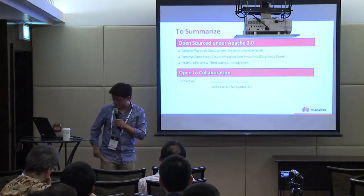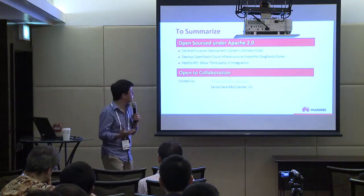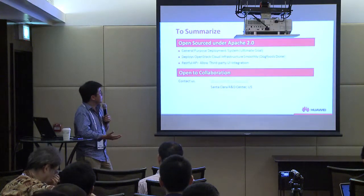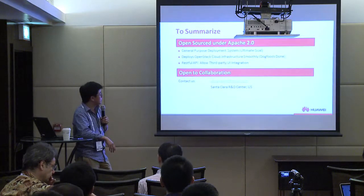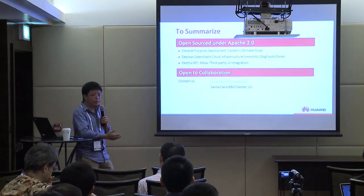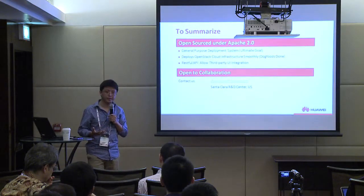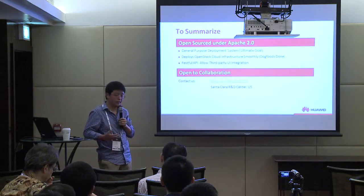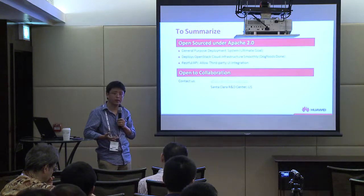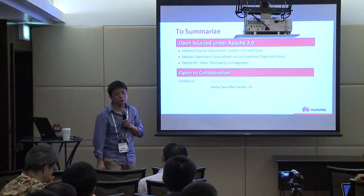To conclude: our ultimate goal is to build a general-purpose deployment system. We have deployed OpenStack cloud infrastructure smoothly. This provides programmability to end users. We came here to seek the opportunity to collaborate. We hope that if you share this vision, we can discuss and build something that lasts. We will open source all code soon under the Apache 2.0 license.